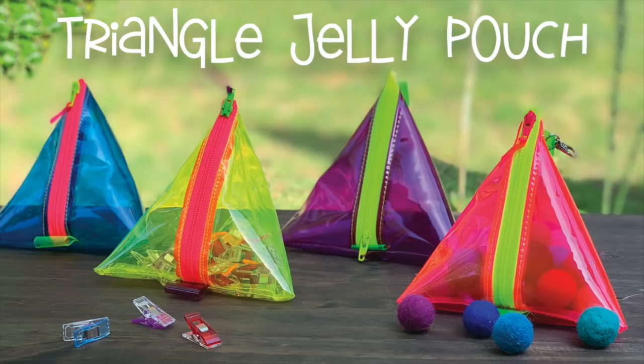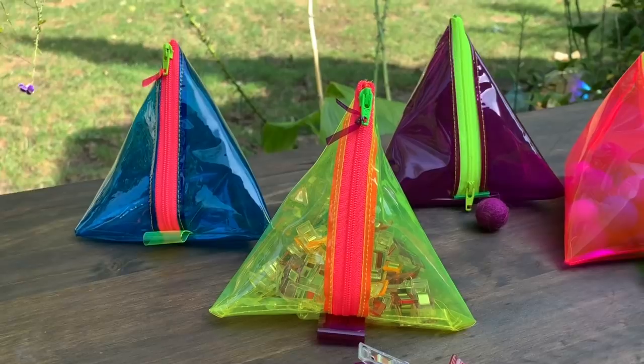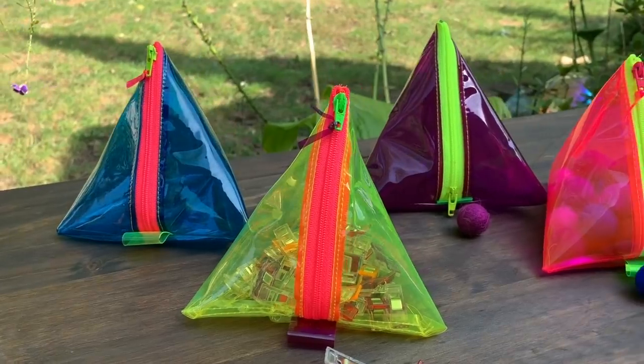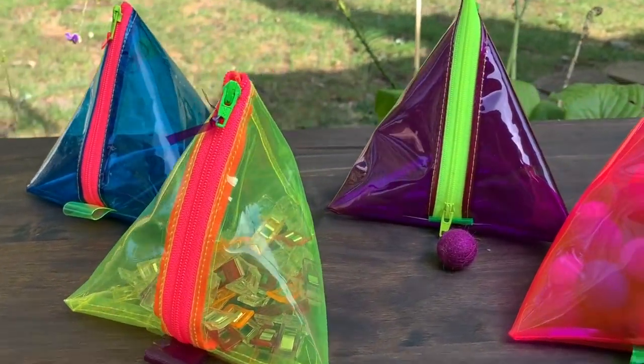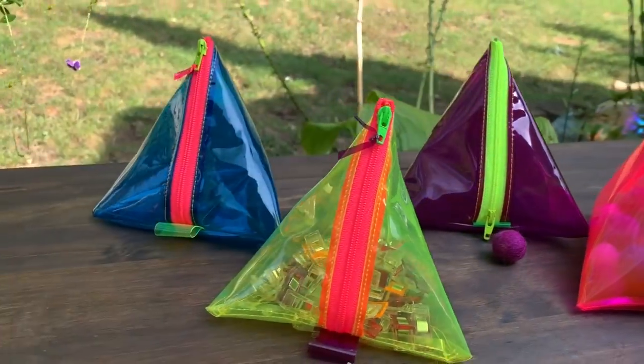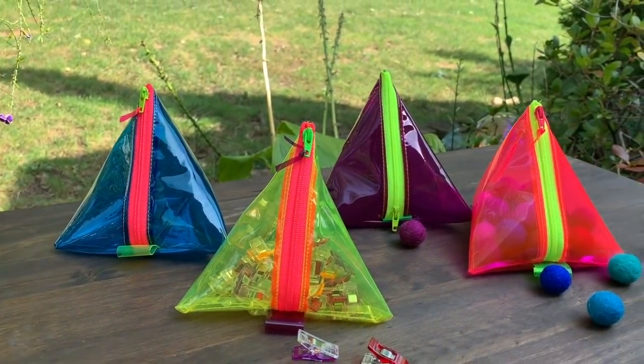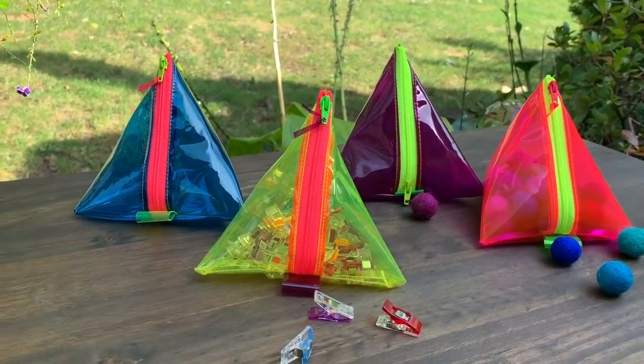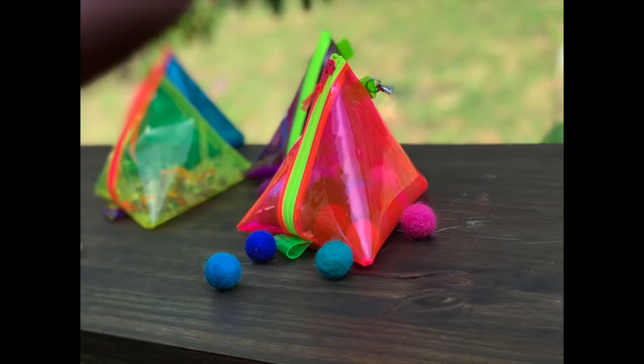Hi everyone, thanks for joining me today. We're going to be making these super cute triangle jelly pouches. These are going to be really cute to hang on the back of a backpack or just to give a treat in, to keep a little knickknacks. You can see I've got my wonder clips in one, I've got some other embellishments in the other ones. I think it's really cute.